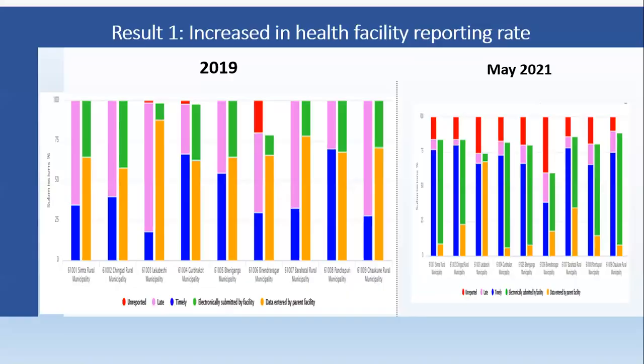We found very encouraging results. Result number one: there was an increase in health facility reporting rate. In 2019, most parent facilities from the local level were reporting on behalf of health workers from the health facility as end users. But in May 2021, we found that those parent facilities were no longer reporting — the facilities themselves as end users were reporting directly. We can conclude from this finding that health workers were more capacitated to enter data in the DHIS2 platform.